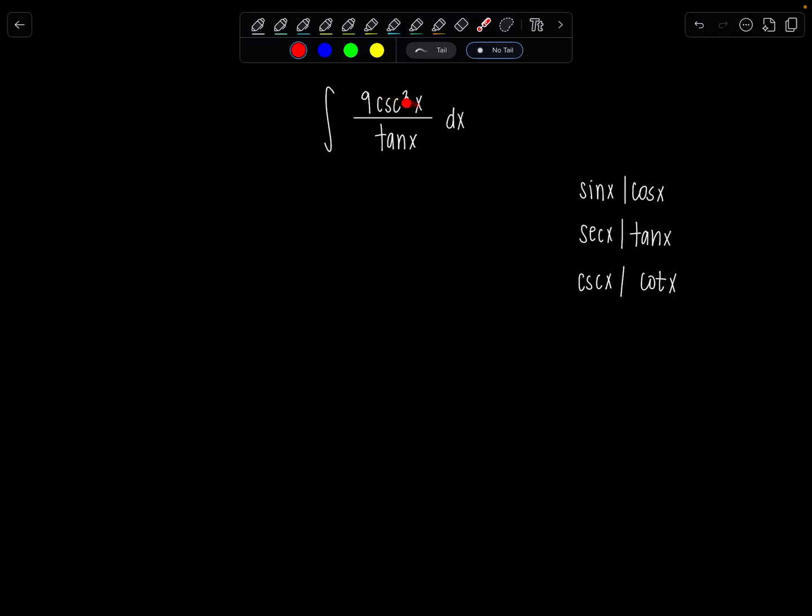So cosecant is cubed. I could make cosecant squared and then another cosecant and break it up. But tan x in the denominator, I can very easily switch to cotangent. So I'm feeling good about that. That's where I'm going to take this.